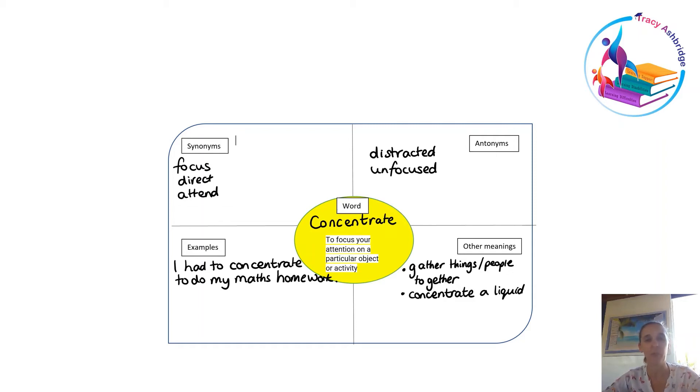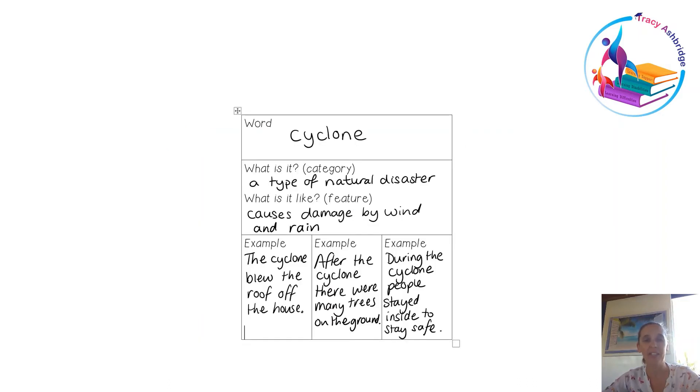Another way I like is to just look at the word and think about what it is, what the category is, what the features are, and then give some examples. For cyclone, the category would be a natural disaster. What is it like? Well, it's not much fun—it's windy, it's rainy, it causes a lot of damage. Then I put some sentences there that would help explain that further.